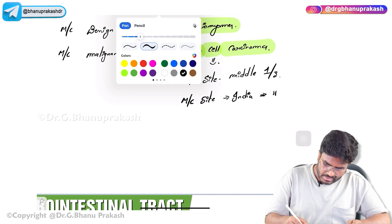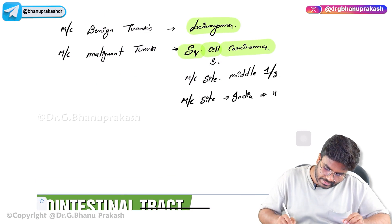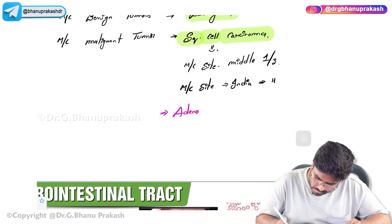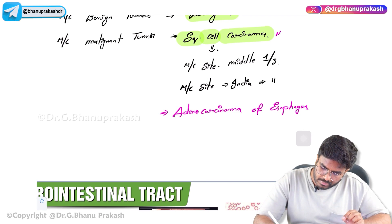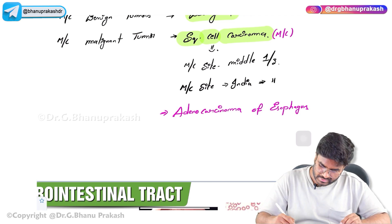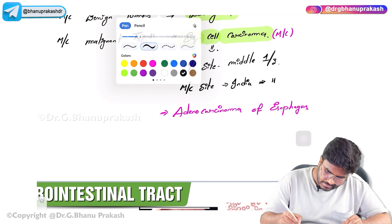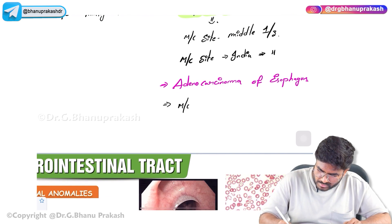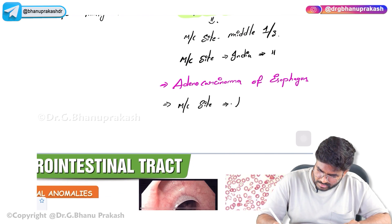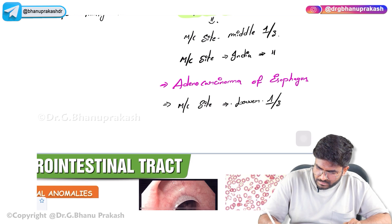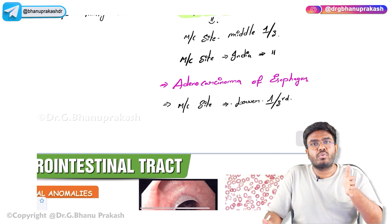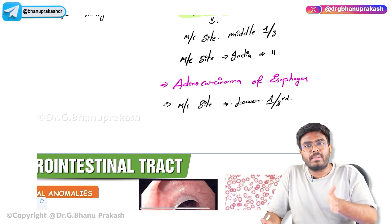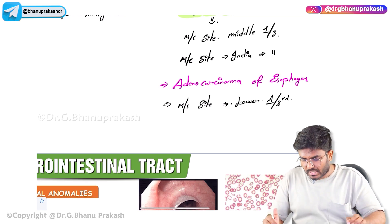The other variety of esophageal cancer is adenocarcinoma of the esophagus. There are two types: squamous cell carcinoma, which is the most common, and adenocarcinoma. The most common site for adenocarcinoma is the lower one-third of the esophagus, and it is a complication of GERD. Gastroesophageal reflux disease causes Barrett's esophagus, which may turn into adenocarcinoma.